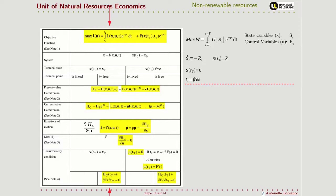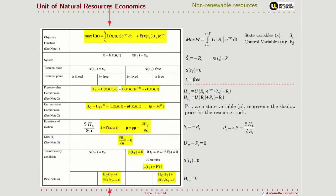Compared with the problem we saw in previous lessons, we have only one state variable and one control variable, so the Hamiltonian is relatively simple. In particular, the costate variable is only one: the price of the natural resource. The adjoint equation describing the dynamics of this price is given when we replace the generic terminology with our specific model.